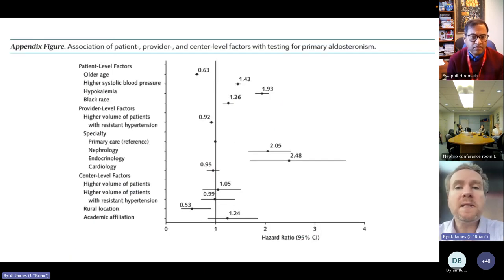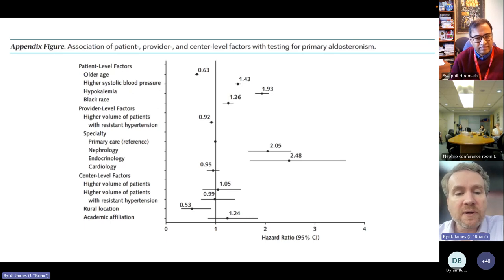When we looked at factors that seemed to predict whether or not people would be tested, we found that older patients were tested less often. Patients who had a higher systolic blood pressure or hypokalemia or black race were all more likely to be tested. Then when we looked at the provider who first saw the patient when they met the criteria for treatment resistant hypertension, if they were seen at that visit by nephrology, they were more likely to have been tested. If they were seen by endocrinology, they were even more likely to be tested. If they were seen by cardiology, they were a little less likely to be tested. We didn't find major differences between high volume centers or low volume centers.